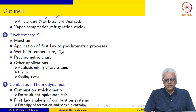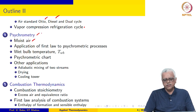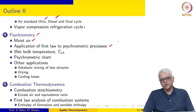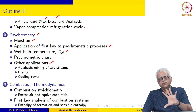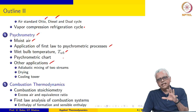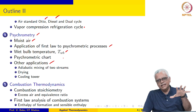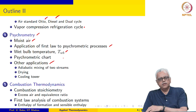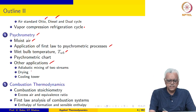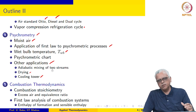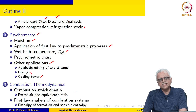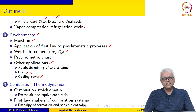The next module deals with psychrometry, which involves calculations with moist air. We start with the definition of moist air, thermodynamic state, and then the application of the first law to psychrometric processes — essentially first-law analysis but applied to moist air. A new concept introduced here is the wet-bulb temperature. We then discuss the psychrometric chart and many other applications relating to HVAC — how to maintain temperature and humidity level in a particular environment. Other applications in psychrometry include drying and cooling towers, which are also extensively encountered in mechanical engineering.